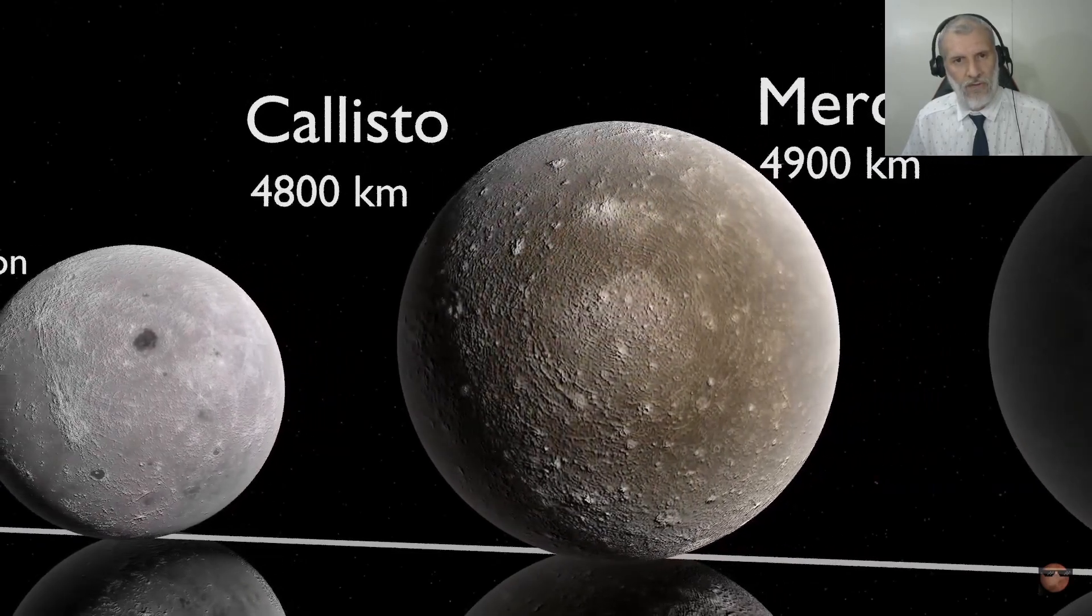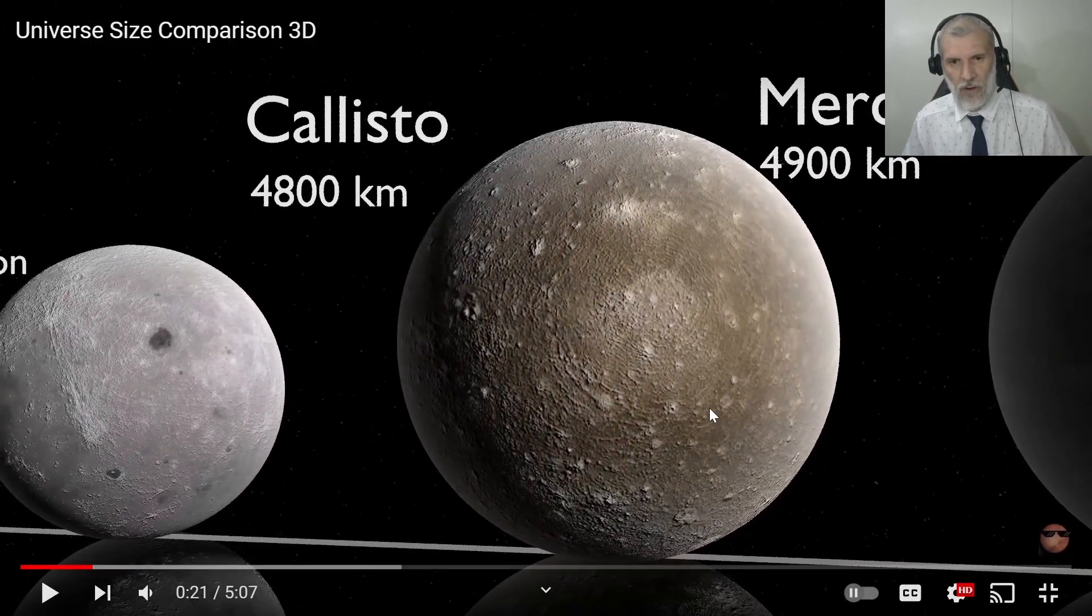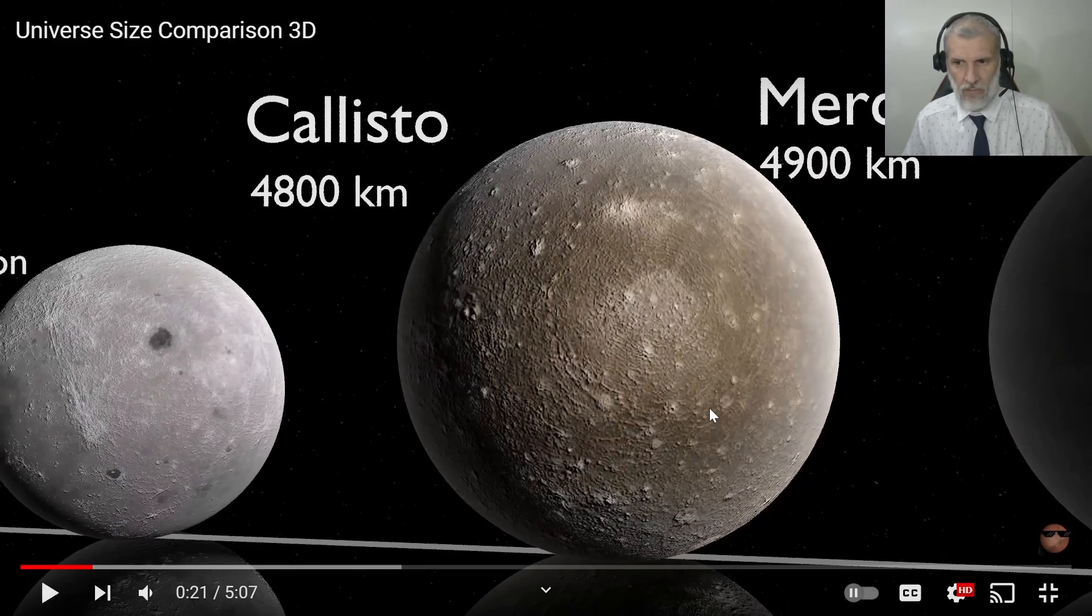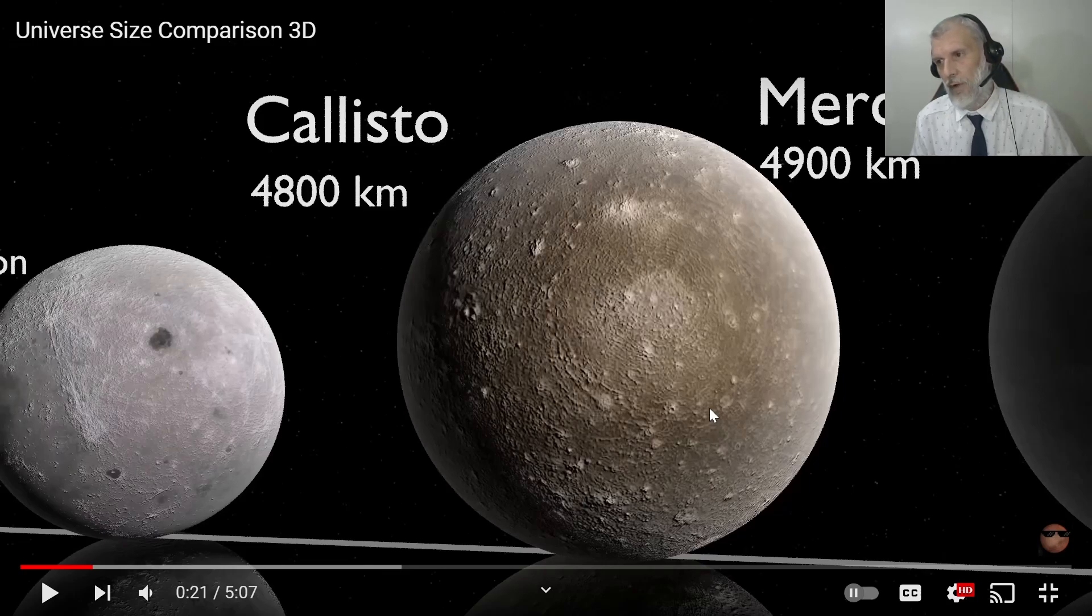All right, so Callisto is one of Jupiter's moons. Callisto's bigger than our moon and almost the same size as Mercury, and it just shows you what sort of gravitational pull Jupiter has to hold basically a planet-sized moon.